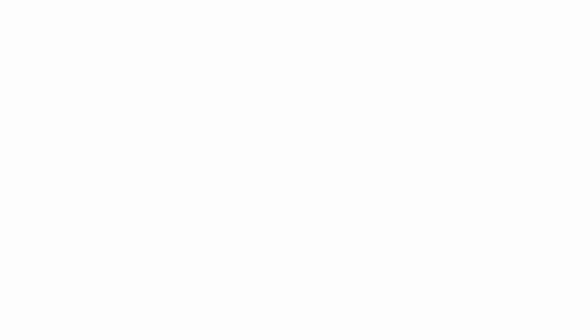Pressure above 29.92 and falling will be ideal feeding conditions with a bite near the surface. They're relieved of their gas and hungry.